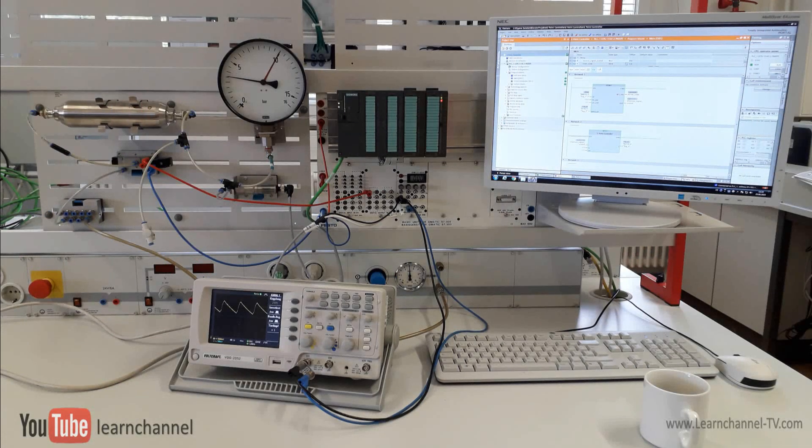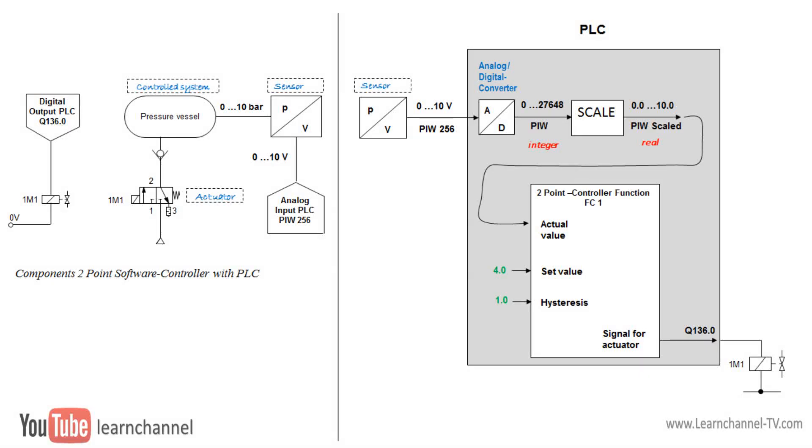In the following, we show how the program could function using PLC. As an example, we take Siemens PLC. First have a plan, how to connect the sensor and the actuator. Here we need an analog input because the pressure sensor gives a signal between 0 and 10 volts. Online you see integer values between 0 and 27648. This range depends on the resolution of the internal analog digital converter. So you should scale it to have a real number corresponding to the sensor output signal.